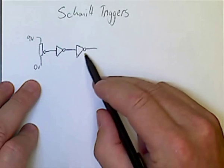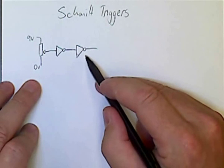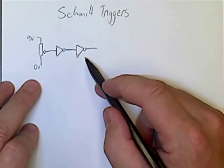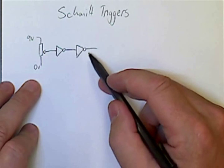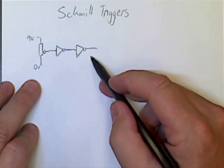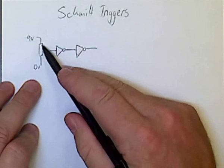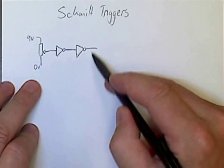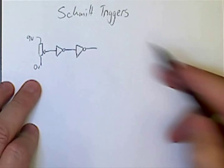The output of our Schmitt trigger, however, is either going to be a logic high or a logic low. They are a digital device. So the output is going to be close to our supply voltage, nine volts, or close to zero volts, and nowhere in between.